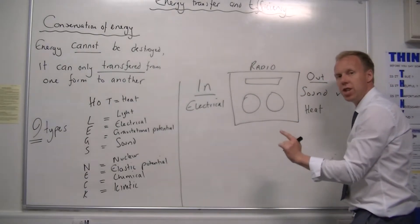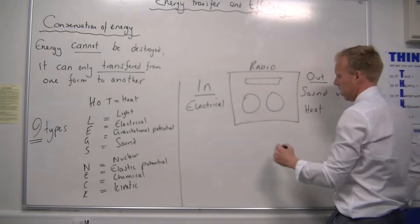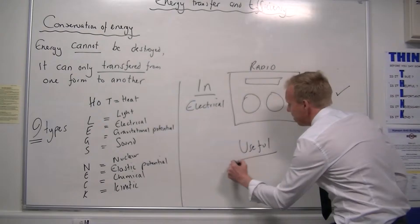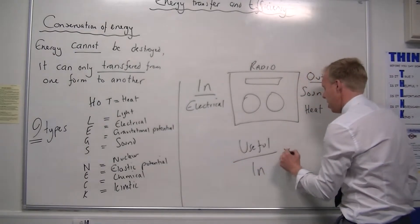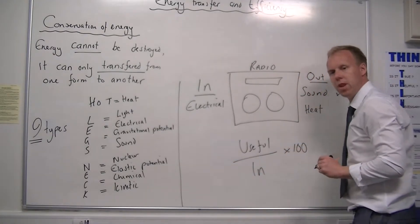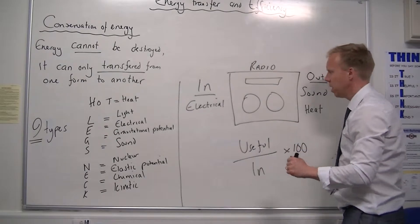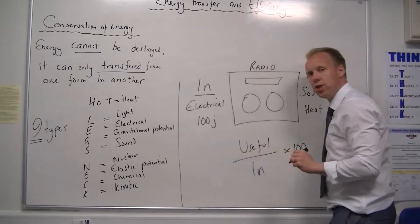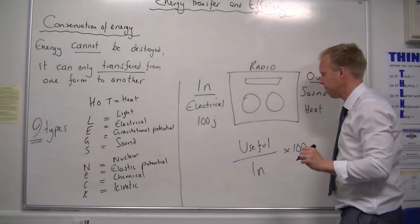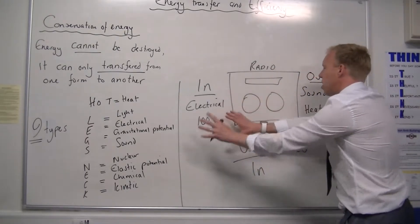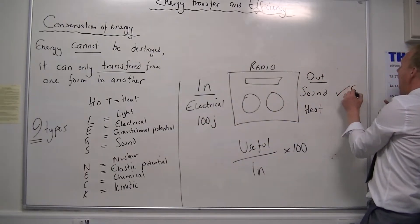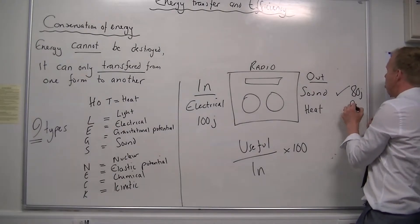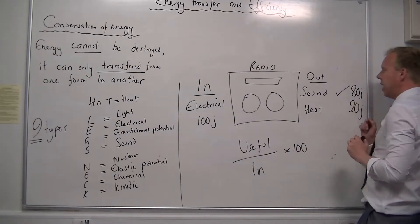And we can calculate efficiency using a simple equation. You take the useful energy, you divide it by the energy you put in, and you times it by 100. So if I can put some numbers onto this, let's imagine we have 100, and J for joules is the unit for energy. And of those 100 joules that we put in, 80 of the joules were sound, and 20 of the joules came out as heat.